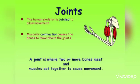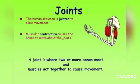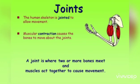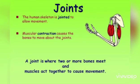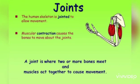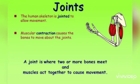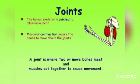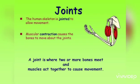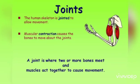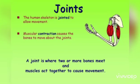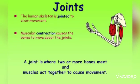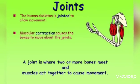Let's study the definition of a joint. The human skeleton is jointed to allow movement. Muscular contraction causes the bones to move about the joints, and a joint is where two or more bones meet.